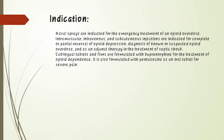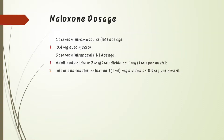Sublingual tablets and films are formulated with buprenorphine for the treatment of opioid dependence. It is also formulated with pentazocine as an oral tablet for severe pain. Naloxone dosages: the dose is given intramuscularly or intranasally. The intramuscular dose is 0.4 mg via autoinjector, and the intranasal dose for adults and children is 2 mg per nostril.